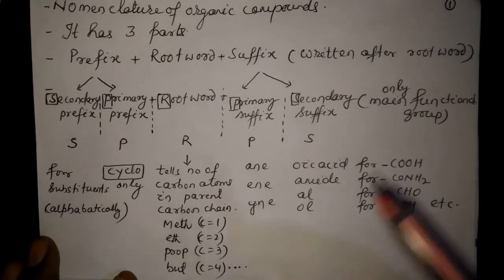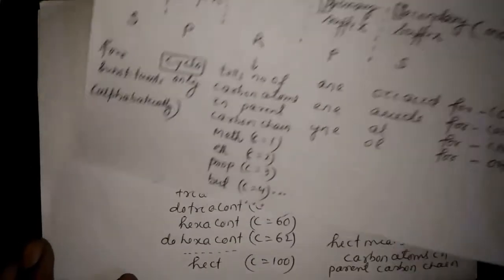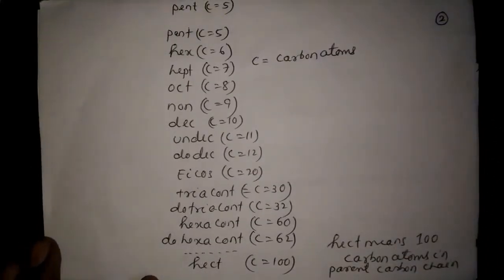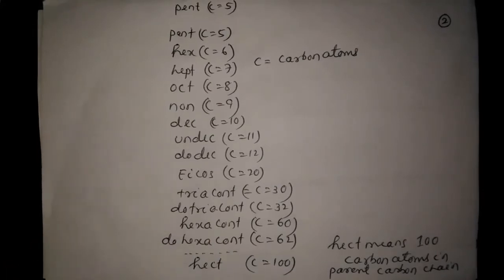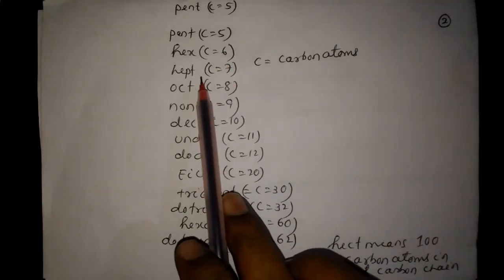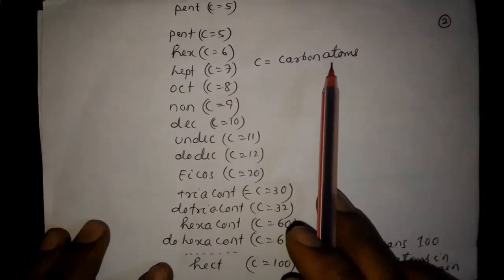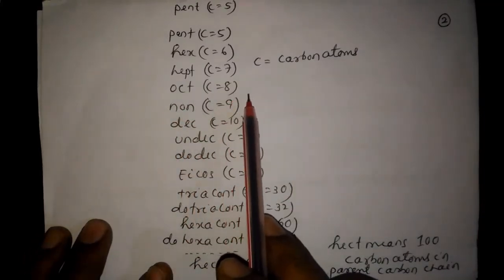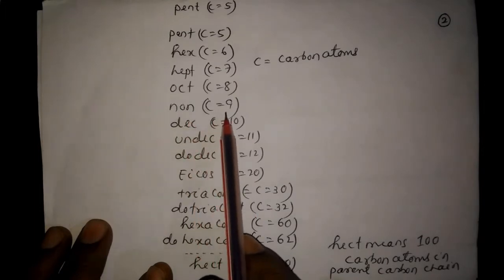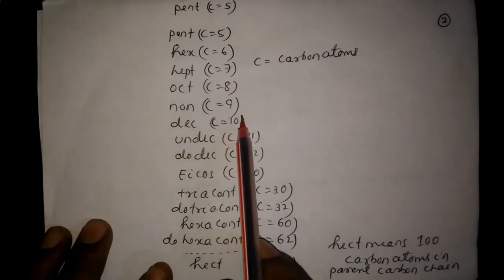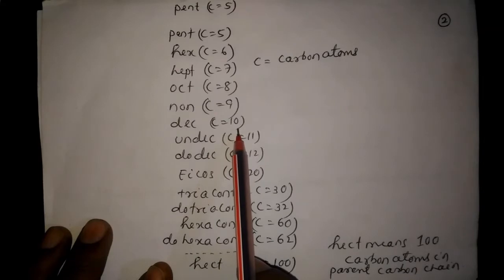Eth means two carbon atoms, prop means three carbon atoms in the parent carbon chain, but means four carbon atoms. Pent means five carbon atoms, hex means six carbon atoms, hept means seven carbon atoms, oct means eight carbon atoms, and non means nine carbon atoms. Dec means ten carbon atoms in the parent carbon chain.